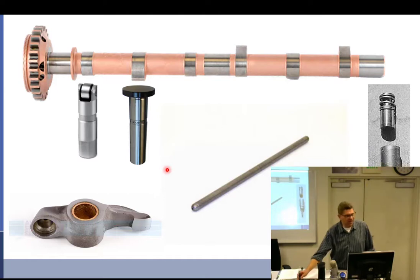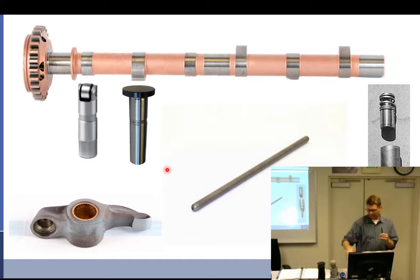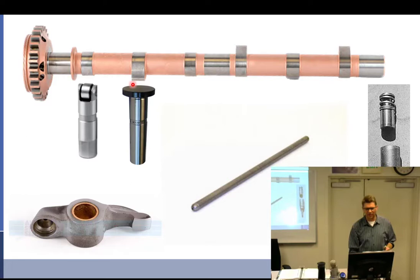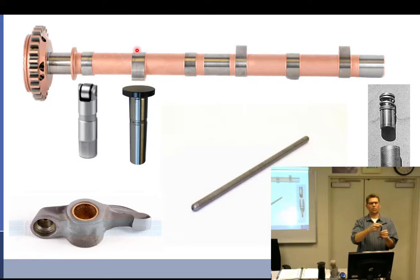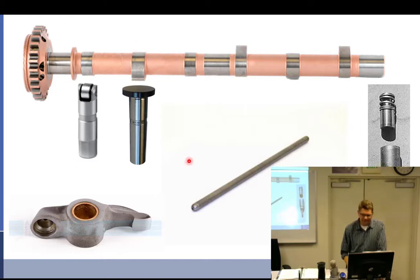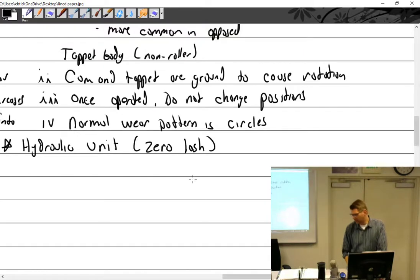Some mechanics have intentionally ground rocker arms to hit at an angle, reasoning that since the cam is ground off-angle to promote rotation, the same principle might apply to the rocker arm. However, this causes premature guide wear — the valve rotates briefly before the guide wears out.